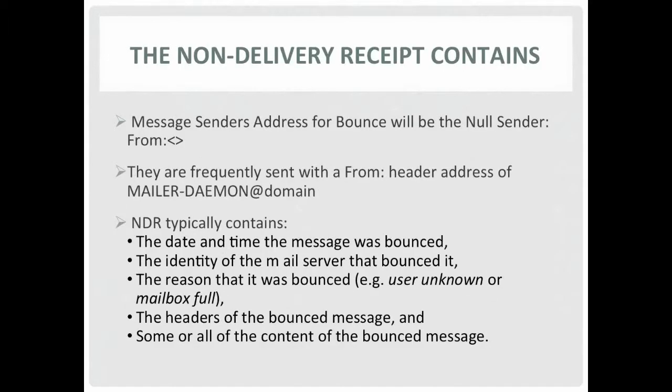Bounce messages are normally sent with an envelope sender address that's from colon, left angle bracket, right angle bracket — commonly called the null sender address. You can't reply to it, which implies it's an administrative message that shouldn't be replied to. They're frequently sent from the address of the domain that sent the NDR. Typically, a bounce message will contain several pieces of information: the date and time the message was bounced, the identity of the email server that bounced it, the reason it was bounced, the headers of the bounced message, and some or all of the content of the bounced message.